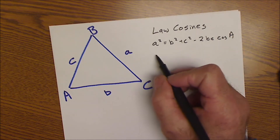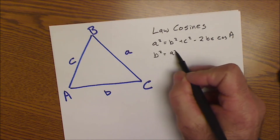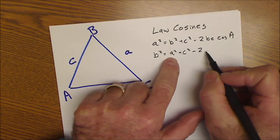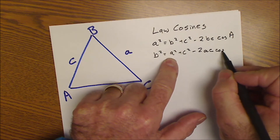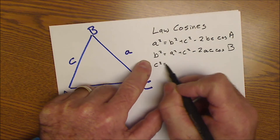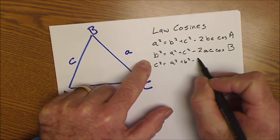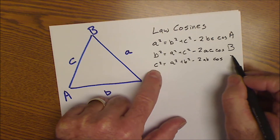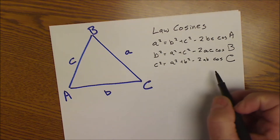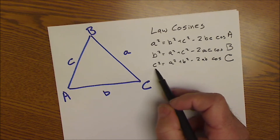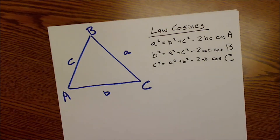You could write this three different ways. You could have b² = a² + c² − 2ac·cos(B), or c² = a² + b² − 2ab·cos(C). There are four variables. You could either plug in three sides and solve for an angle, or plug in two sides and an angle and solve for a third side. Let's look at solving for an angle first.